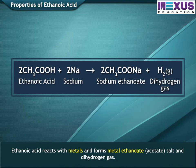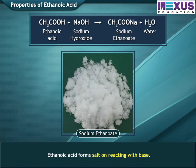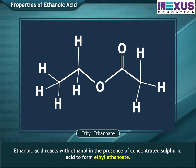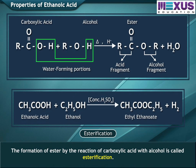Ethanoic acid reacts with metals and forms metal ethanoate salt and dihydrogen gas. It also forms a salt on reacting with a base. Ethanoic acid reacts with ethanol in the presence of concentrated sulfuric acid to form ethyl ethanoate. The formation of an ester by the reaction of carboxylic acid with an alcohol is called esterification.